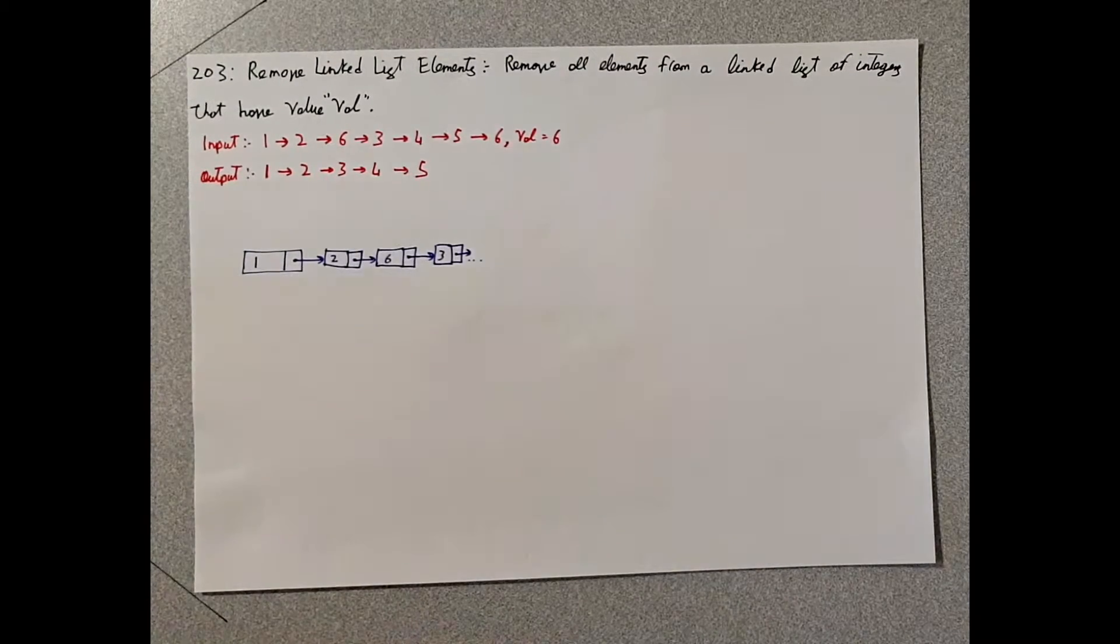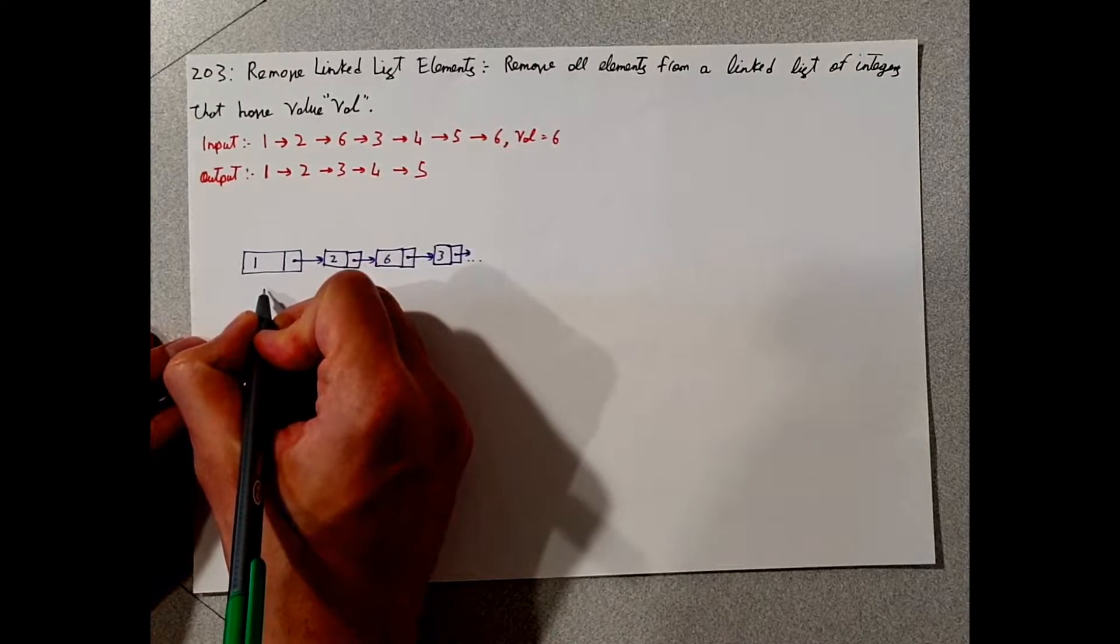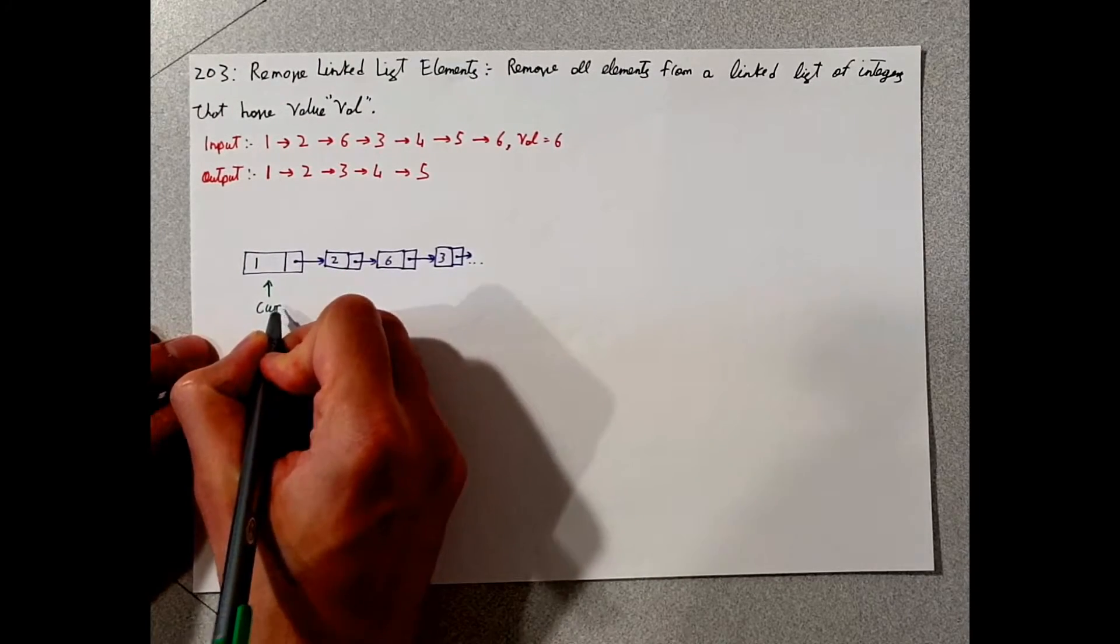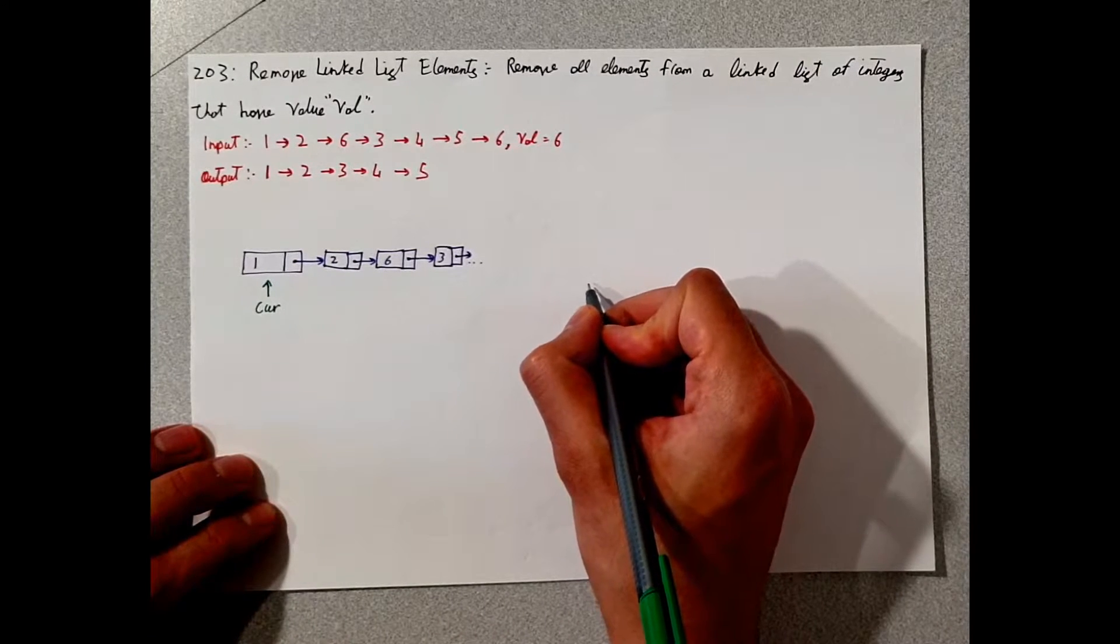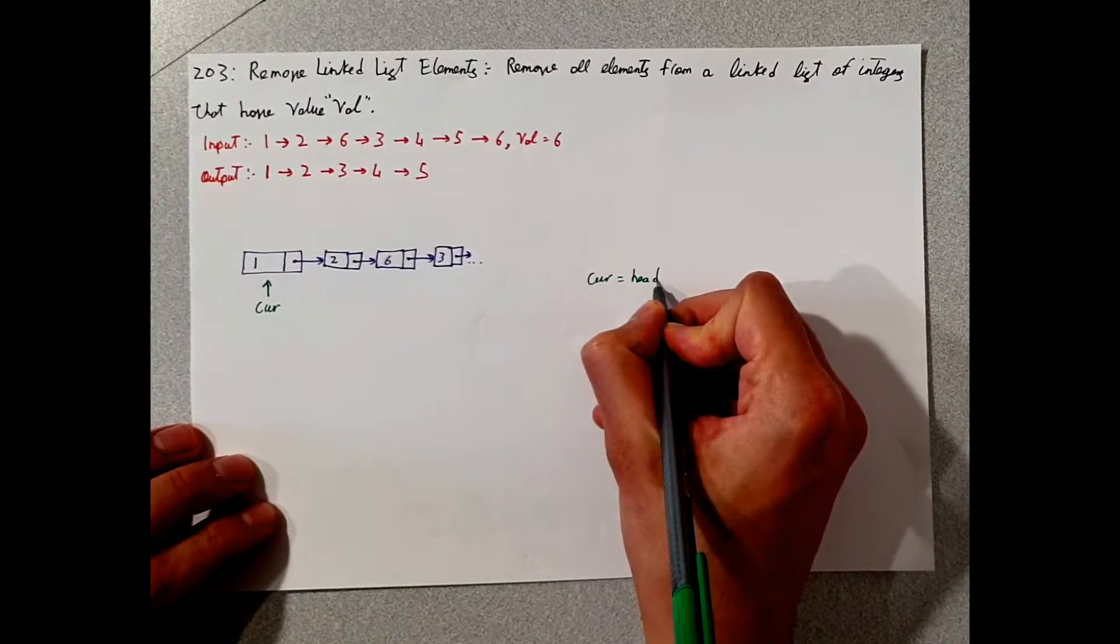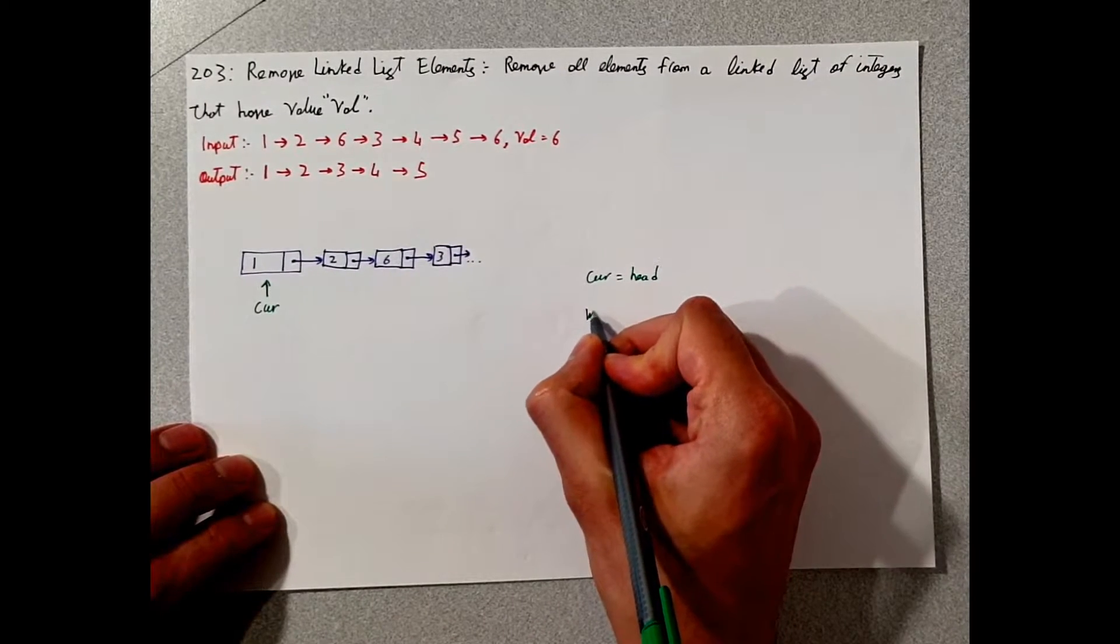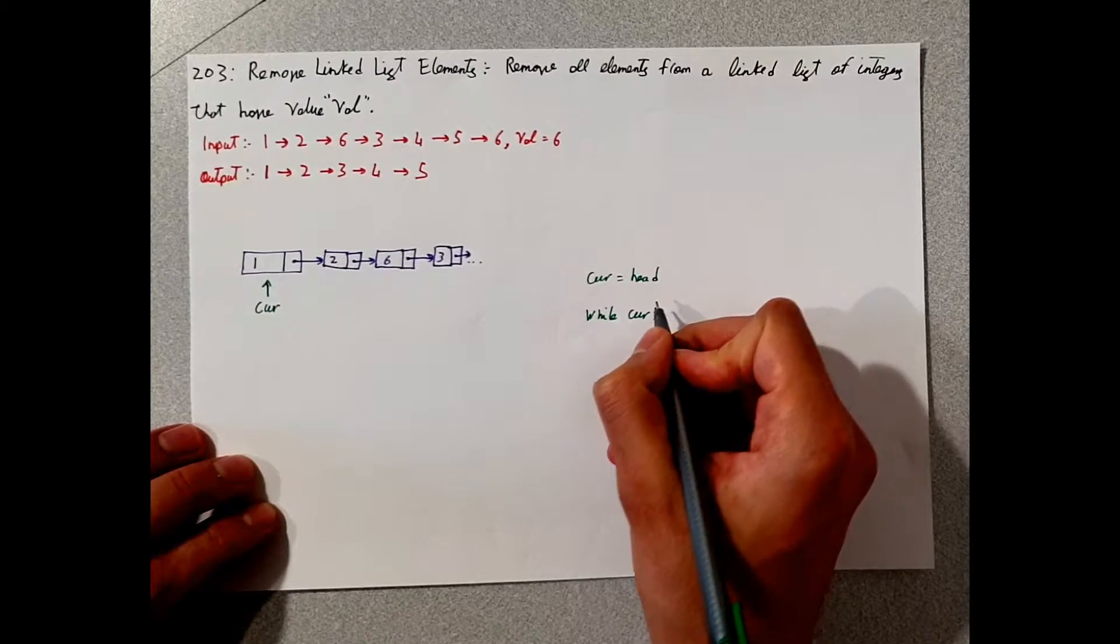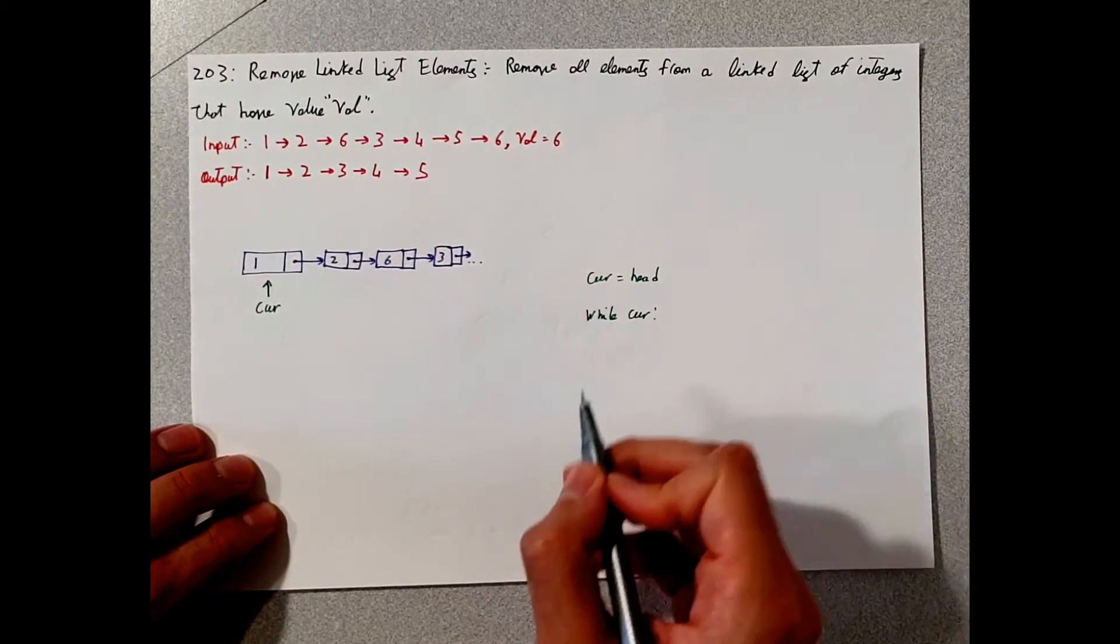So how can we do this in code? The first way to think about it is we can create a variable called current. So let's say the current will be pointing at the head, which is in this case here. So we can say while current, which is basically while the value is true, while you haven't reached the end here, which is null.